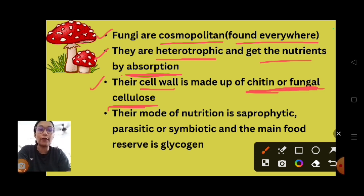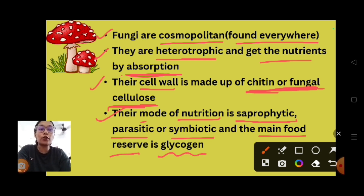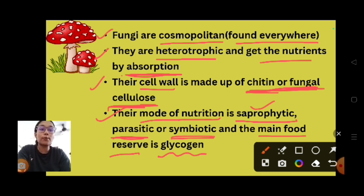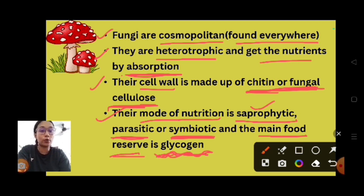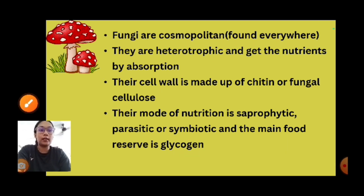Their mode of nutrition is saprophytic, parasitic, or symbiotic. Their main food reserve is glycogen. Saprophytic means they feed on dead and decayed matter. Parasitic means they can live on a host organism. They also show symbiotic relationships. The main food reserve is glycogen — just like in animals — whereas in plants, it is glucose.